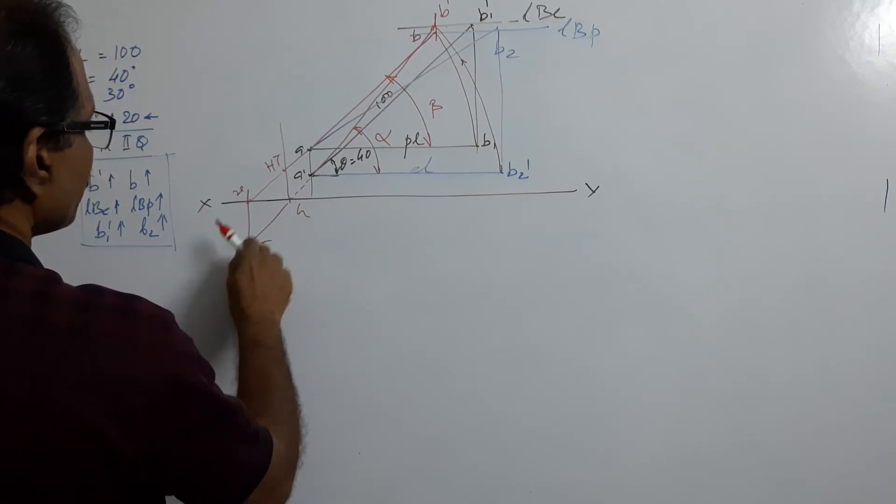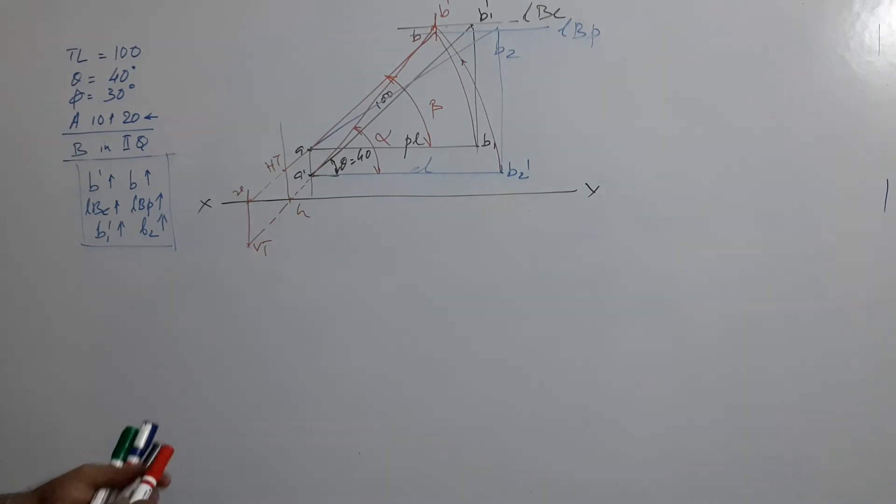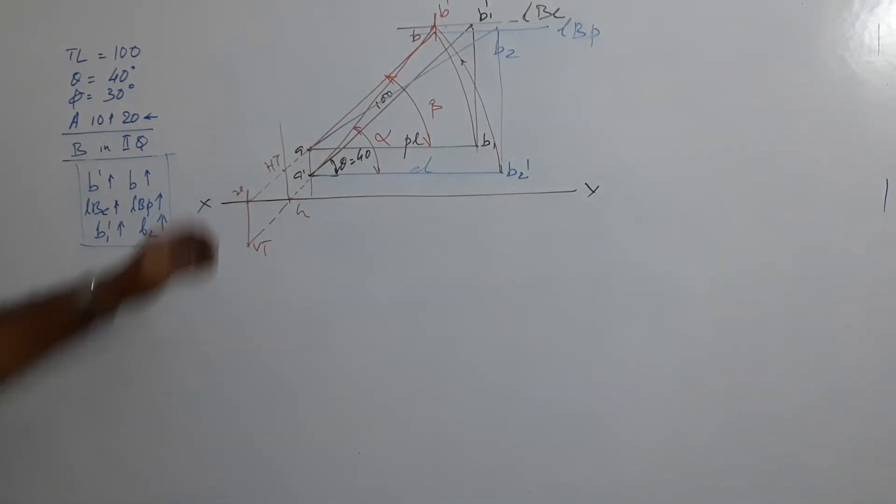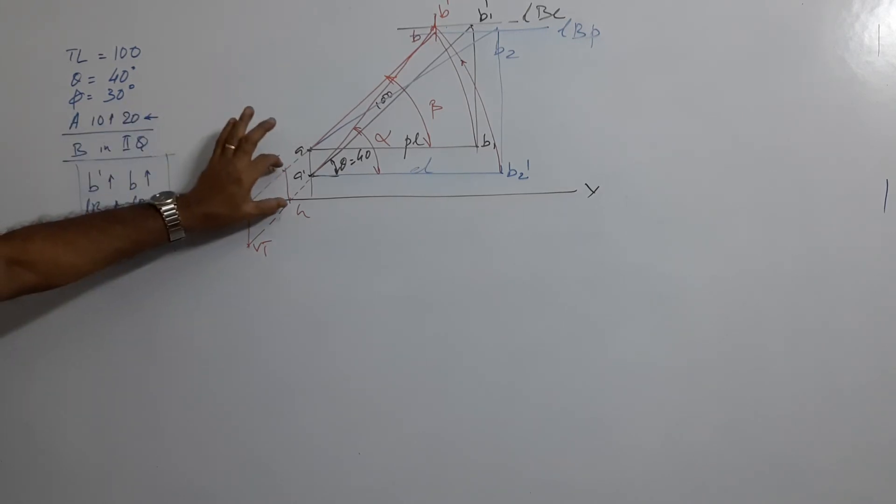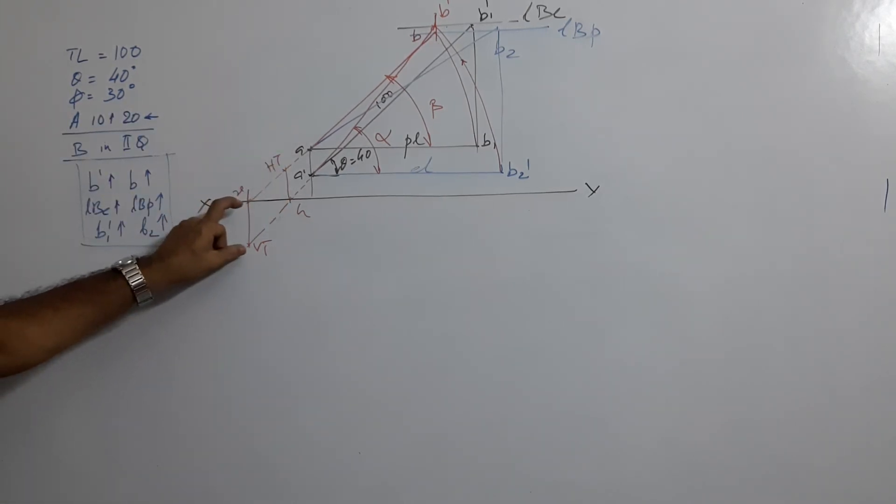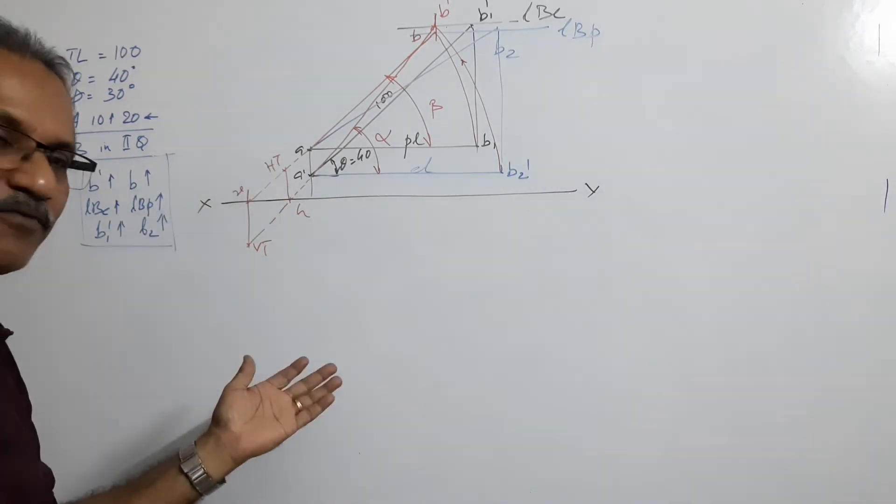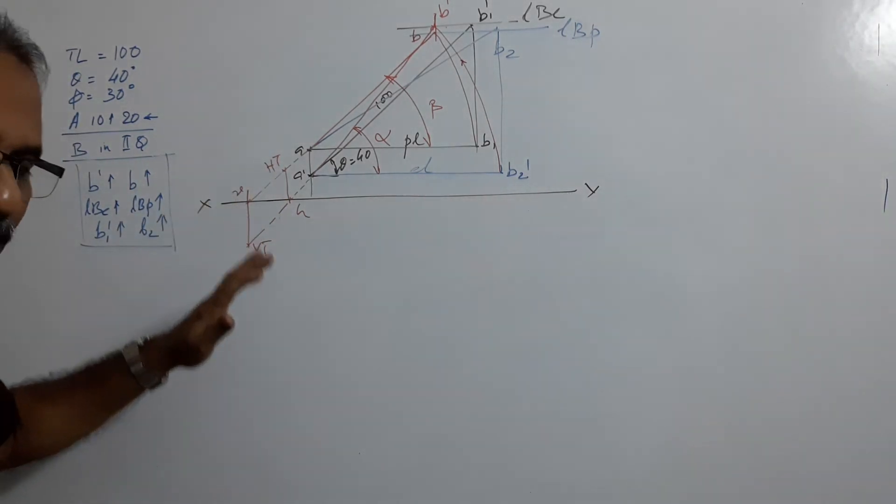V, you can make them rotate to avoid confusion if you want. So we will say what? HT is such and such distance behind VP, and VT is such and such distance below HP. I repeat, HT is such and such distance behind VP, and VT is such and such distance below HP.